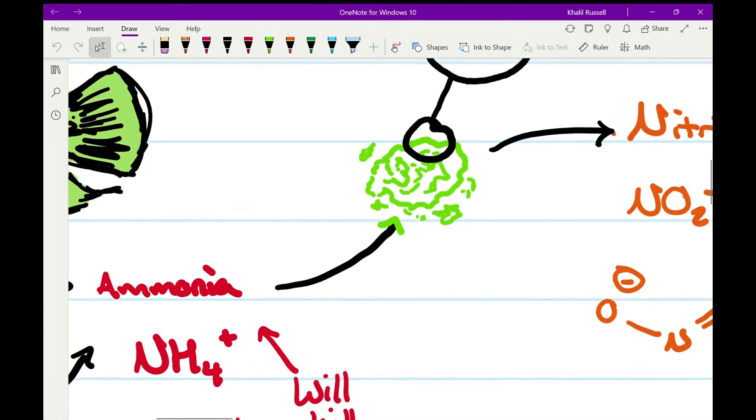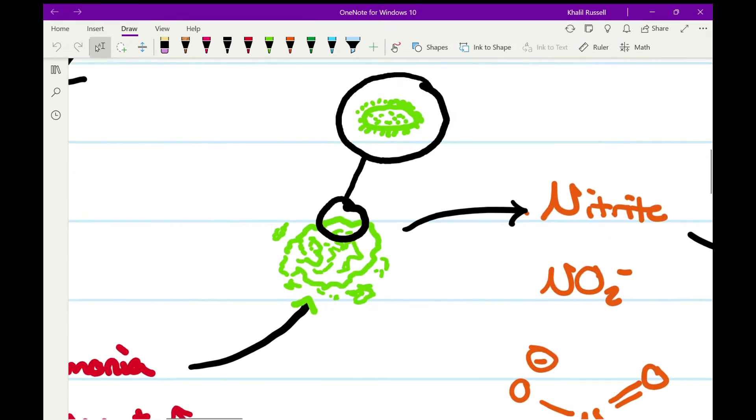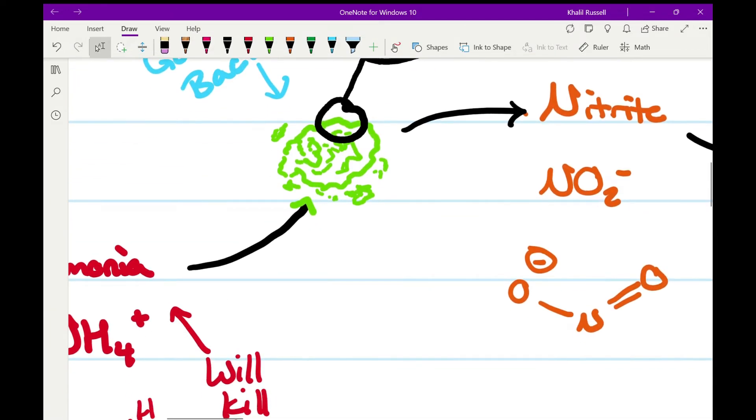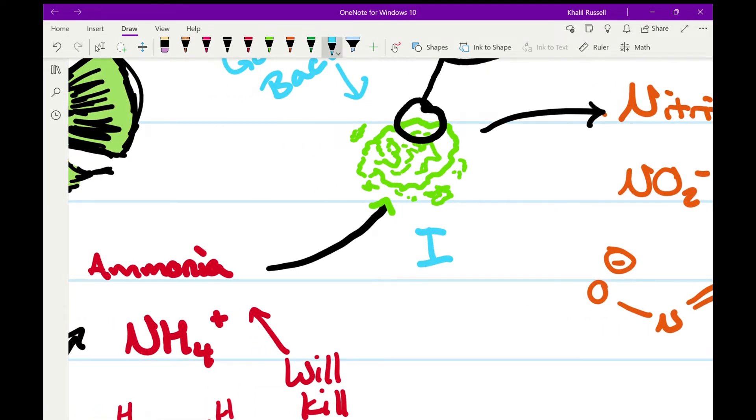You do not want it in your aquarium. So you produce ammonia. Now what do you do? Well, you have some good bacteria. I tried to draw bacteria here. Basically, here's your good bacteria. And what it's going to do, this first bacteria, bacteria one, it takes the ammonia and it turns it into nitrites.